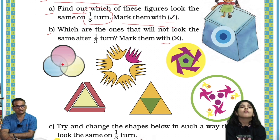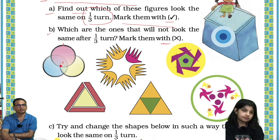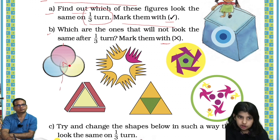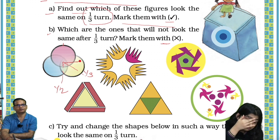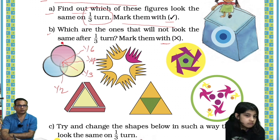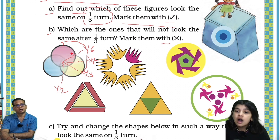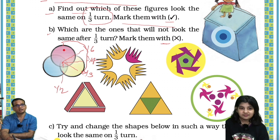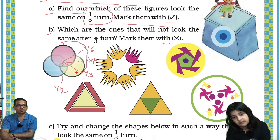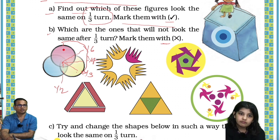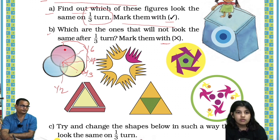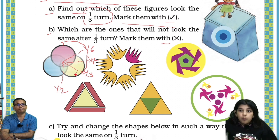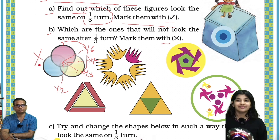Will this figure be the same after turning it by one third? It would not look the same. The reason — color change. Yes, you are right. If you turn this one third, this image will not be the same because if you turn it, this color will change. Here yellow is there, but if you turn it, the color will be different — it will become pink. So this is not the same, so I should put a cross.